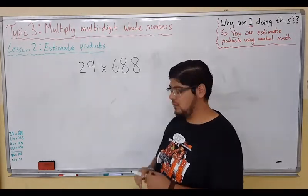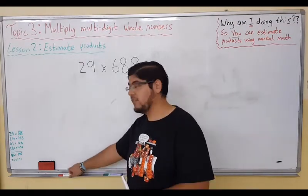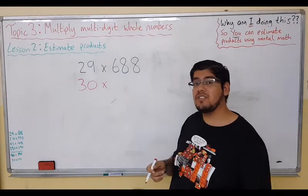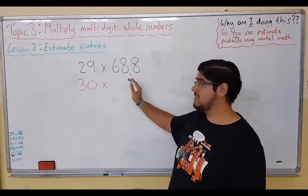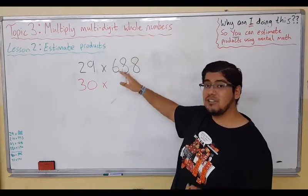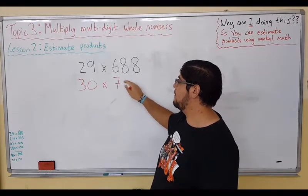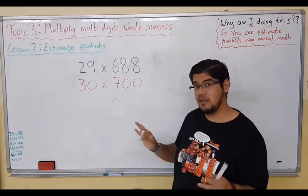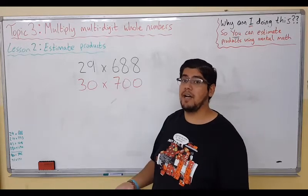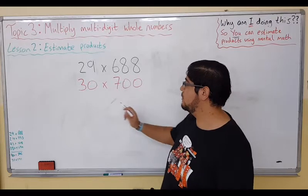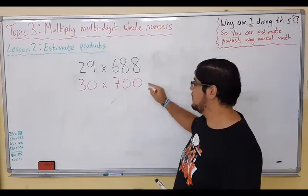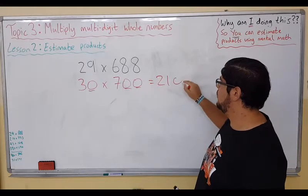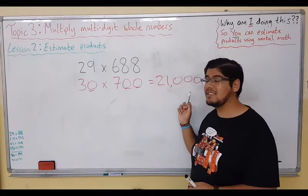29, what number is it close to? Let's round. It's close to 30, only one away from 30, so let's use that. 688 is very close to 700. Let's look at 88 itself—it's very close to 100, so 688 goes up to 700. Now we have numbers that we can easily work with. We have lots of zeros at the end, which is great, and our first two numbers are very compatible because we know them from our times tables. 3 times 7 is 21, and now we can just add our zeros. We have one, two, three zeros. That is our estimate.